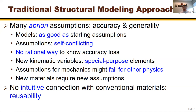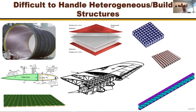Assumptions for mechanics may fail for other physics. When dealing with smart systems, assumptions for mechanics don't necessarily work for temperature or electricity. New materials from advanced manufacturing constantly push us to develop new assumptions — that's not a good approach. Furthermore, there's no intuitive connection with conventional materials; for every new structure and material you must come up with a new theory, leading to an endless proliferation of theories.